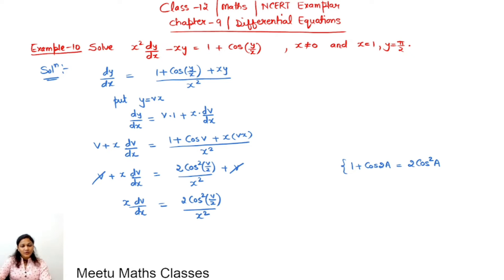Now this will become a question of variable separable. Function of v can be taken to this side, 1 by cos square v by 2, and x can be taken to the right hand side. Now integrating both sides.